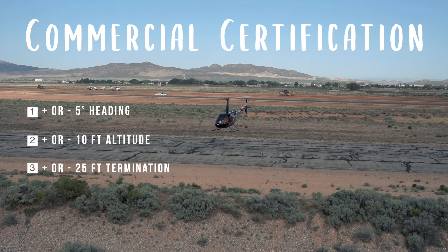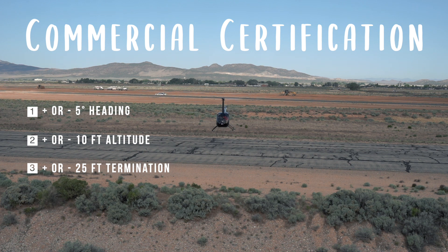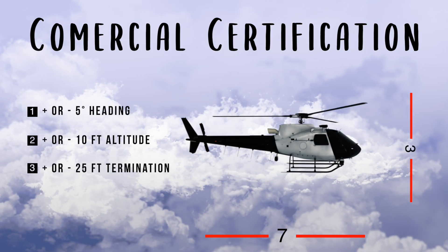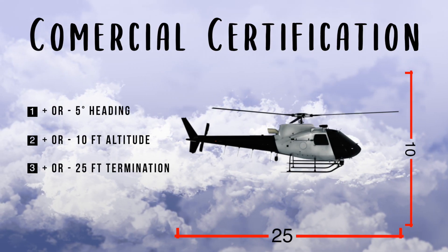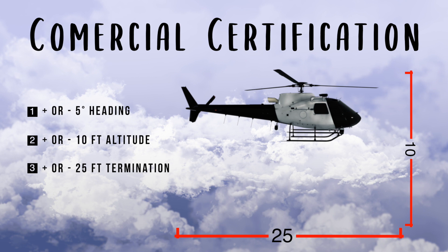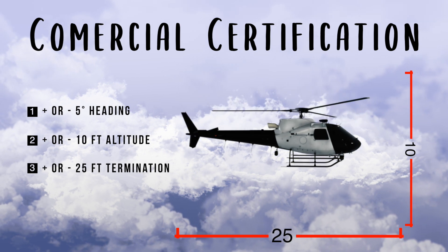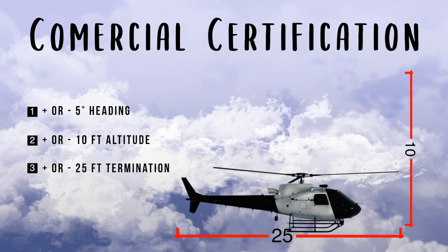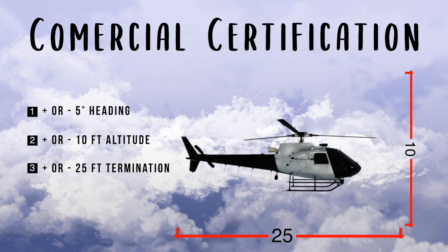For your commercial certificate, your heading may not vary by more than five degrees, your altitude by 10 feet, and the termination point by more than 25 feet.